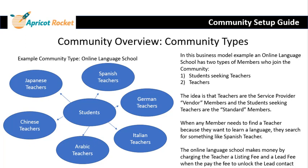Another example of a business model for a community would be an online language school. Here you would have students seeking language instruction — Japanese, Spanish, German, and so on. The vendor members would be the teachers and the standard members would be the students. A student would come into the community and type something like 'Spanish language lessons' or 'Spanish teacher,' and the community would make money when the teacher unlocks the incoming lead. The community might also charge a fee to teachers just to be listed and have the opportunity to get leads.